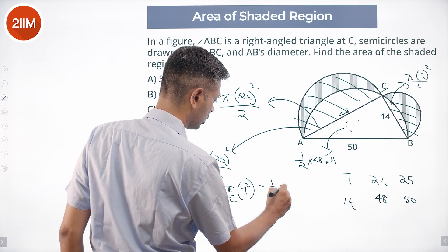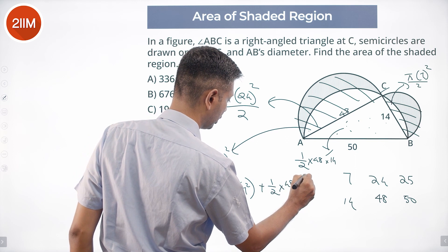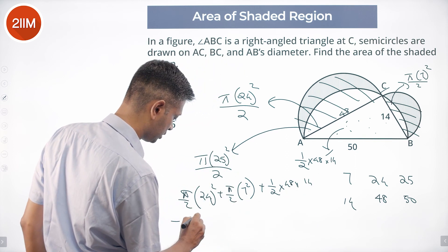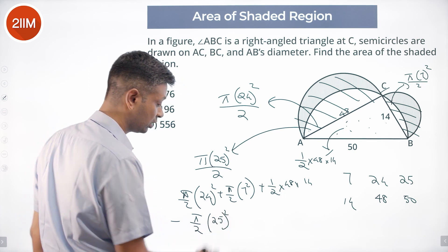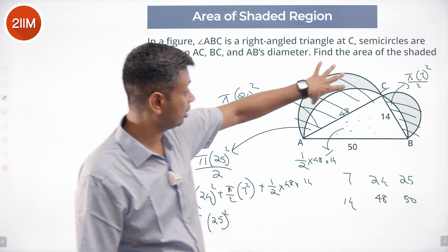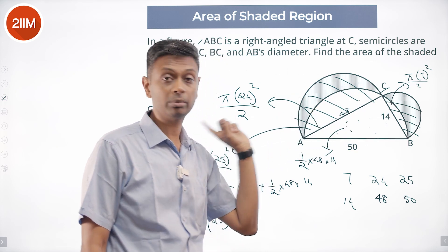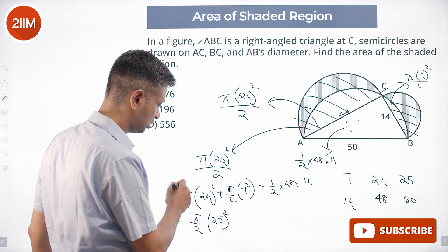Plus half times 48 times 14 minus π by 2 times 25². This is the answer we are looking for: semicircle plus semicircle plus triangle minus the big semicircle. This plus this is this.